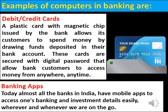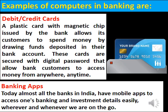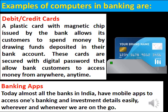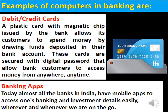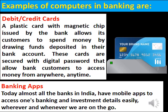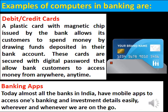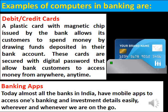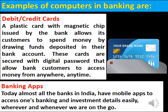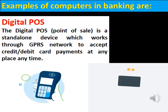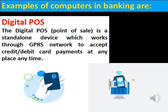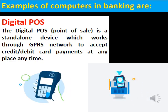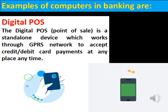Further examples of computers in banking: first, debit and credit cards — a plastic card with a magnetic chip issued by the bank allows customers to spend money by drawing funds deposited in the bank account; these cards are secured with a digital password and allow customers to access money from anywhere anytime. Second, banking apps — almost all banks have mobile apps to access banking and investment details easily wherever we are. Third, digital POS — point of sale — is a standalone device which works through a GPRS network to accept credit and debit card payments at any place anytime.